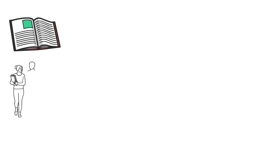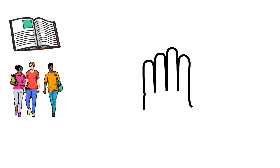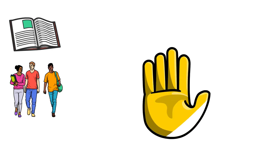Have you ever told a story to a friend using details so that your friend will understand? Good readers do this while writing or explaining what a story is about. The five finger retell technique uses important parts of the story to help the reader understand what the story is about.